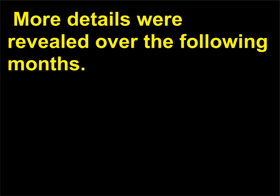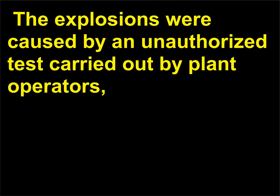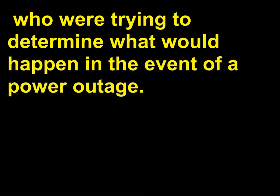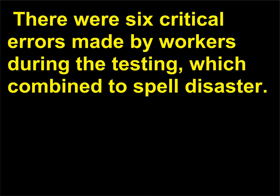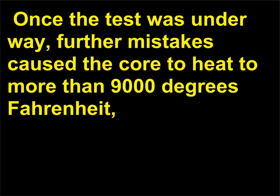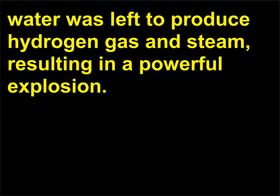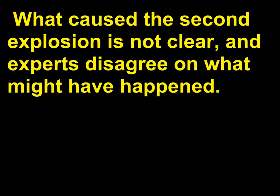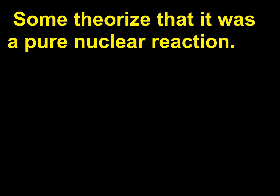More details were revealed over the following months. The explosions were caused by an unauthorized test carried out by plant operators, who were trying to determine what would happen in the event of a power outage. There were six critical errors made by workers during the testing, which combined to spell disaster. Perhaps the most significant of these mistakes was turning off the emergency coolant system. Once the test was underway, further mistakes caused the core to heat to more than 9,000 degrees Fahrenheit, producing molten metal that reacted with the cooling water left to produce hydrogen gas and steam, resulting in a powerful explosion. What caused the second explosion is not clear, and experts disagree; some theorize that it was a pure nuclear reaction.